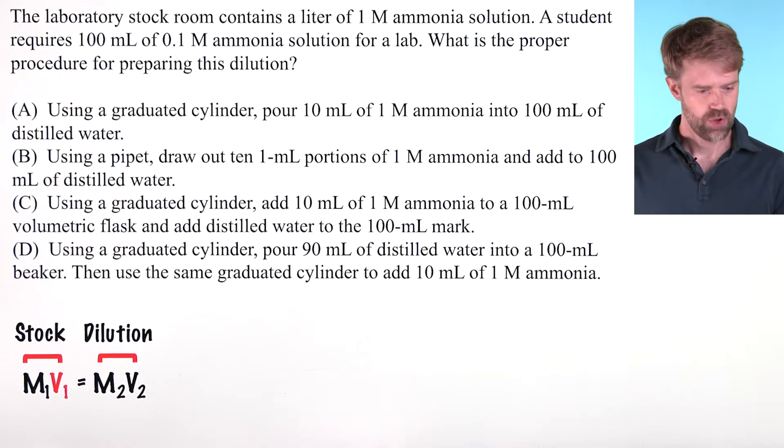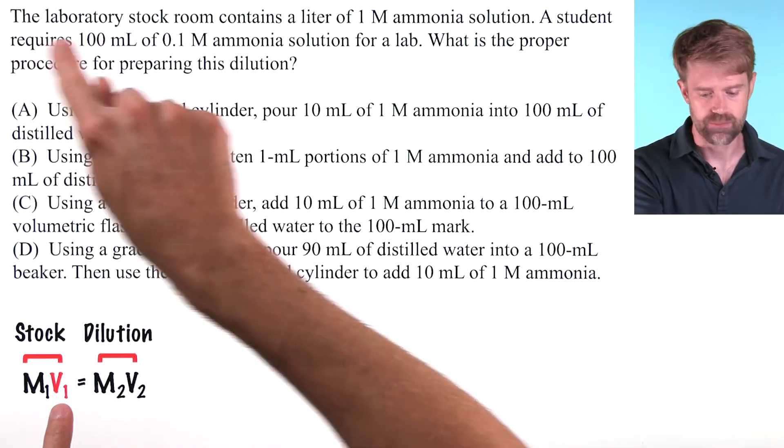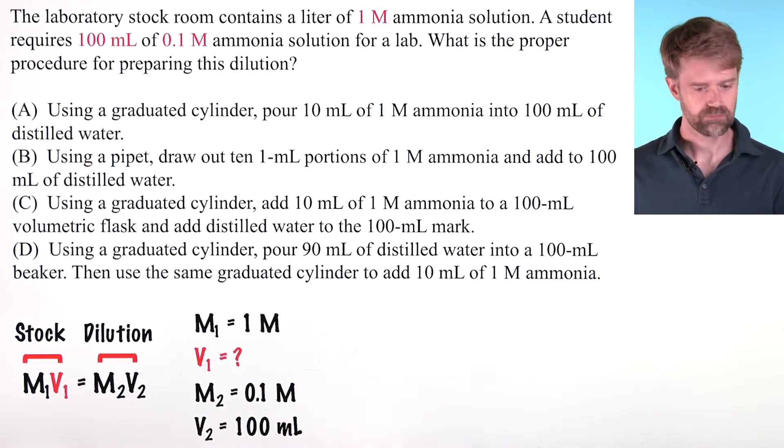So usually when using the dilution equation, you're solving for V1, which is how much of this stock solution you need to dilute. It's always a good idea to write down your knowns and unknowns for dilution problems because it's really easy to confuse which variable is which.